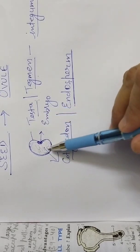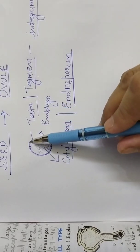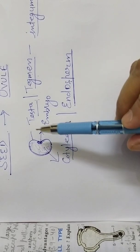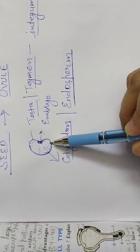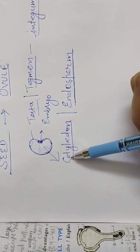So basically there are three main parts of the seed. The coverings, the membranes, the embryo and the stored food which is in the form of cotyledons or endosperm.